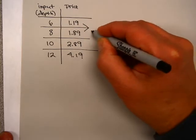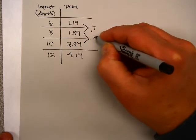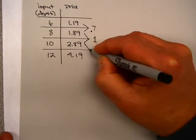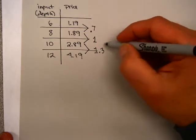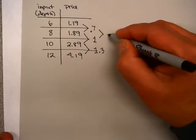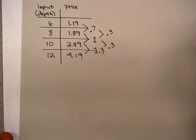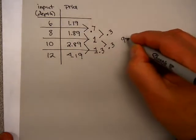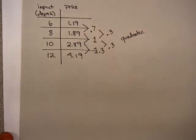Let's calculate first differences. If you calculate first difference here, you notice that's $0.70. The first difference here is $1.00, and the first difference here is $1.30. So we see the first differences are not the same, which means it is not linear. If we look at the second differences, in this case, we'll see that the second difference is the same.